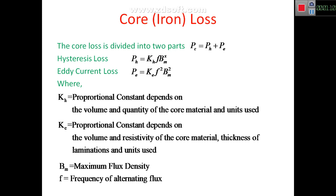KH is a proportional constant which depends on volume and quantity of the core material. KE is also a proportional constant for eddy current loss and depends on voltage and resistivity of the core material, as well as the thickness of laminations and units used. BM is maximum flux density and F is the frequency of the alternating flux.